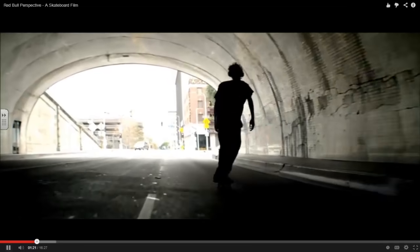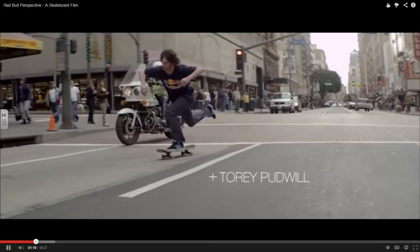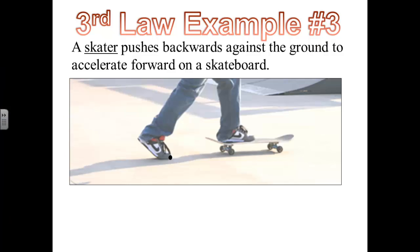Our last example involves a skateboarder. So a skater pushes backward against the ground to accelerate forward on a skateboard. If you've ever ridden a skateboard, it's actually kind of interesting. In order for you to go forward on a skateboard, you actually have to push backwards on the ground. Well, what's really happening in this situation? Let's draw a force diagram for the skateboarder. The skateboarder has mass, so there's a force of gravity on the skateboarder by the earth pulling down. The foot's on the ground and flexing the ground, and so the ground's going to be pushing up with a normal force, equal in size to the force of gravity.